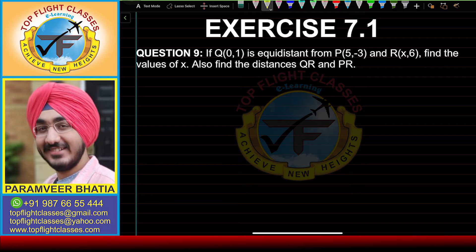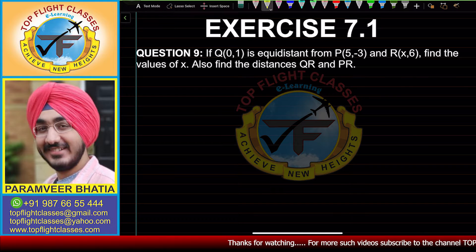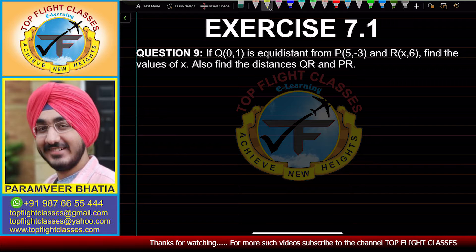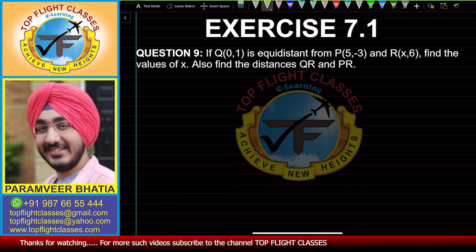In this video, we are going to solve question number 9 of exercise 7.1. Question number 9 says: if Q is equidistant from points P and R, find the values of x. Also find the distances QR and PR.